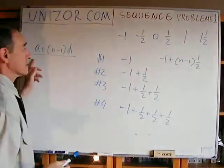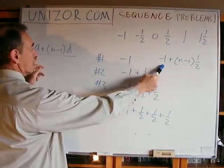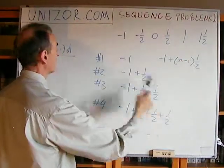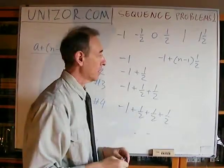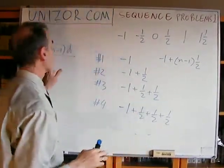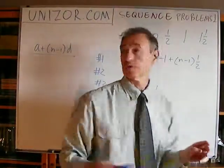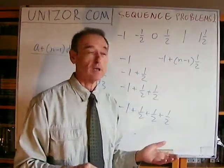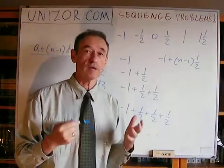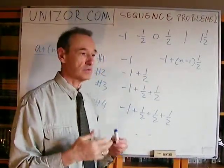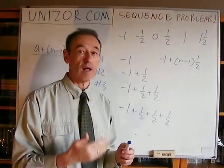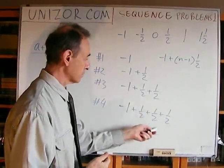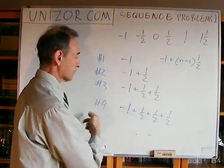As you see, this is exactly the same as the standard formula. A is minus one in this case. D is one half because every time we step forward, we increment by one half. And the n minus one is exactly the same multiplier. So again, don't try to remember the formula for the nth element of the arithmetic progression. Derive it every time you need it. It was just an illustrative example of the fact that you don't have to remember certain formulas as long as you understand the logic. The logic is: you add the difference — one half in this case — n minus one times for every nth element.